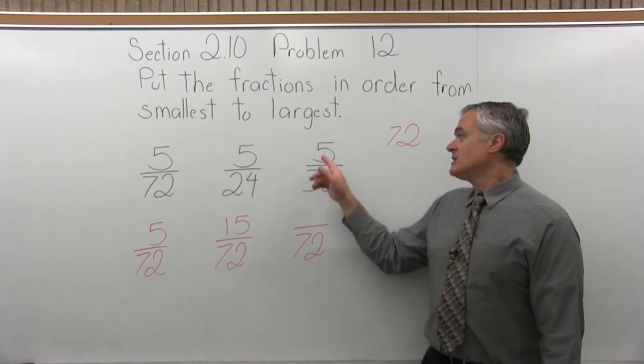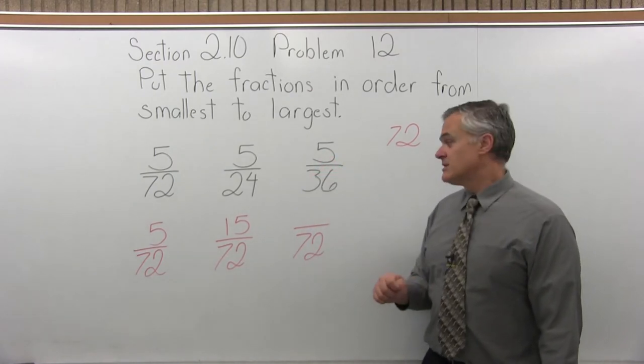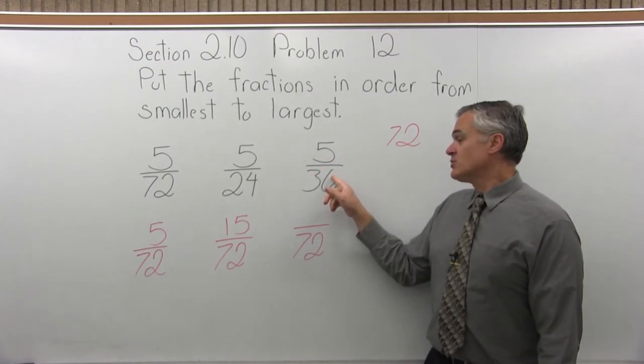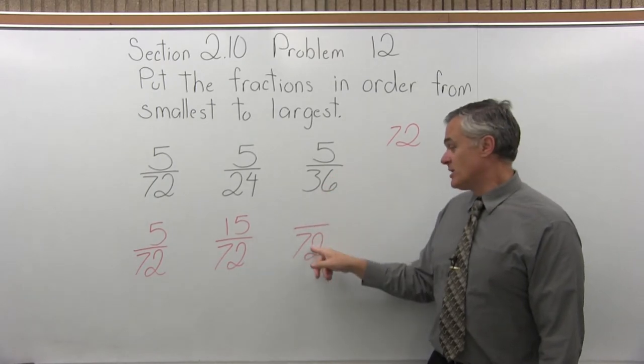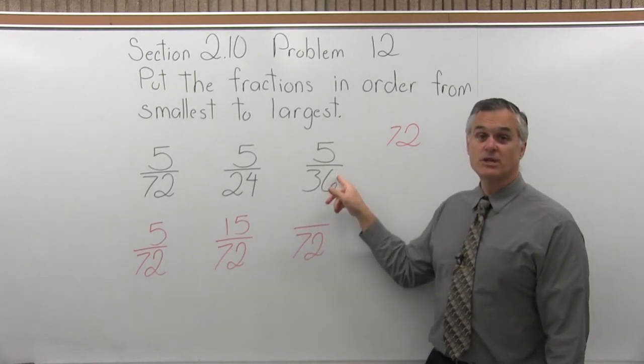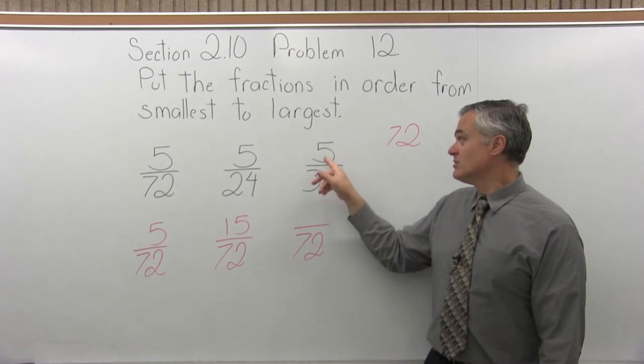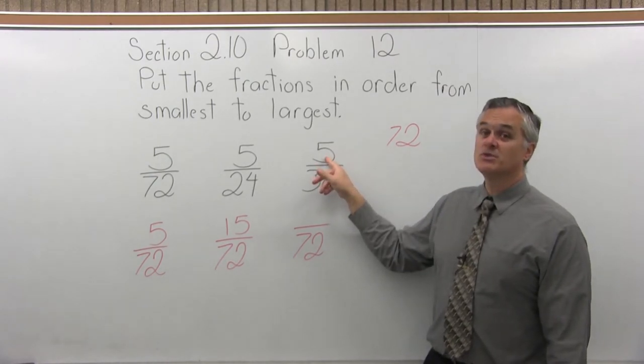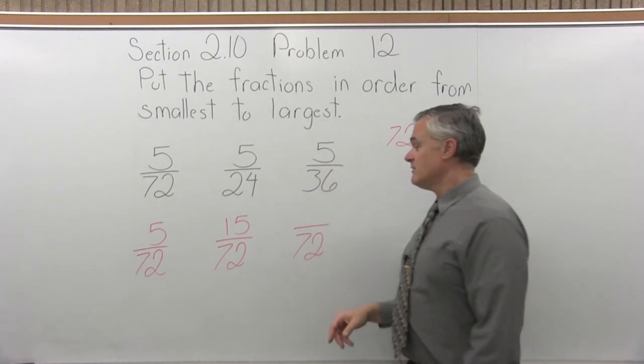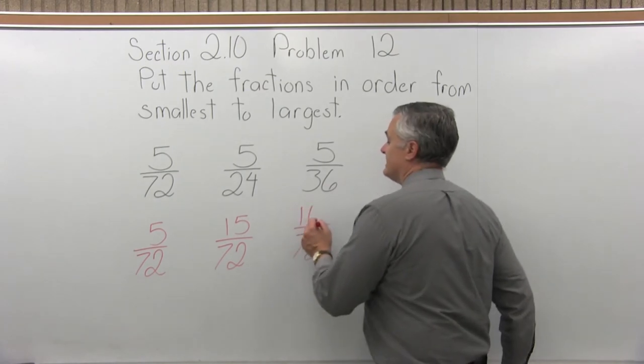And then finally, the last one, 5 over 36. So 36 was the denominator. The new denominator is 72. So I must have multiplied the 36 times 2 to make a 72. So the numerator 5 would also be multiplied times 2. 5 times 2 is 10.